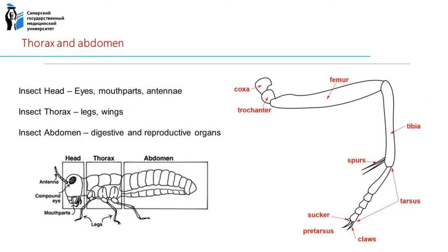The abdomen consists of six — e.g. in Collembola — to twelve — e.g. in Protura — segments. Most insects have ten segments.